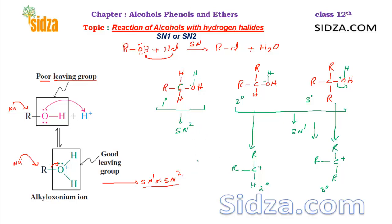From primary alcohols, if SN1 were followed, you would get a primary (one-degree) carbocation — but we know SN1 is not favorable there because a primary carbocation is very unstable. Therefore, it is easier for the primary alcohol to follow SN2 mechanism. In SN2, the nucleophile attacks from the back side, so no carbocation intermediate is formed for the primary alcohol. The chlorine can then attack on the carbon.